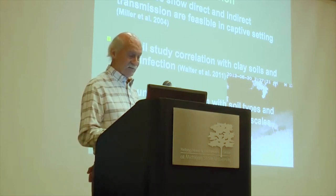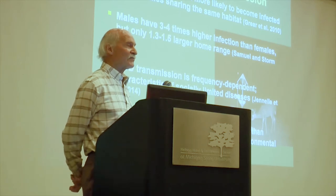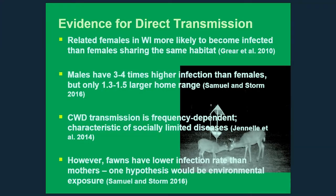What's the evidence for direct transmission? This isn't very good either. With deer's cryptic nature and nighttime behaviors, understanding contact and transmission is pretty challenging. But there are some anecdotal signals. In Wisconsin, we found that related females — if you're related to a positive female — have a much higher probability of becoming infected than an unrelated female sharing the same environment. That's a signal that social contact between related females may be an important factor in direct transmission.